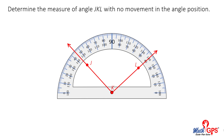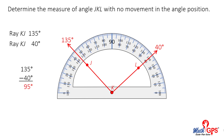Determine the measure of angle JKL with no movement in the angle position. How can an angle measure be determined if neither ray is at the zero degree location? If the tick mark values are read from zero degrees to 180 degrees in a counterclockwise direction, ray KJ passes through 135 degrees and ray KL passes through 40 degrees. How can this information be used? We can subtract. The difference is 95 degrees.